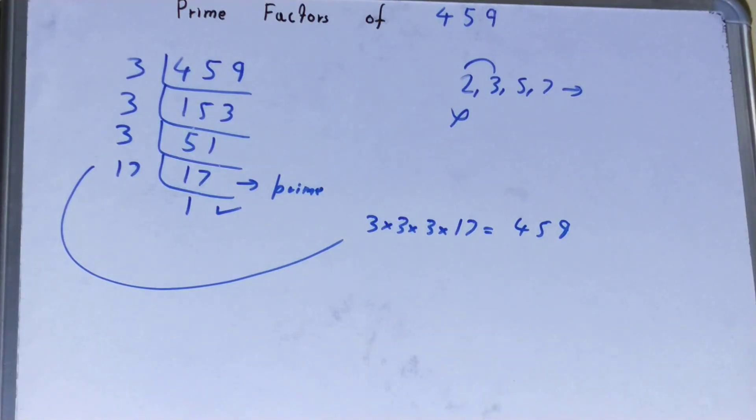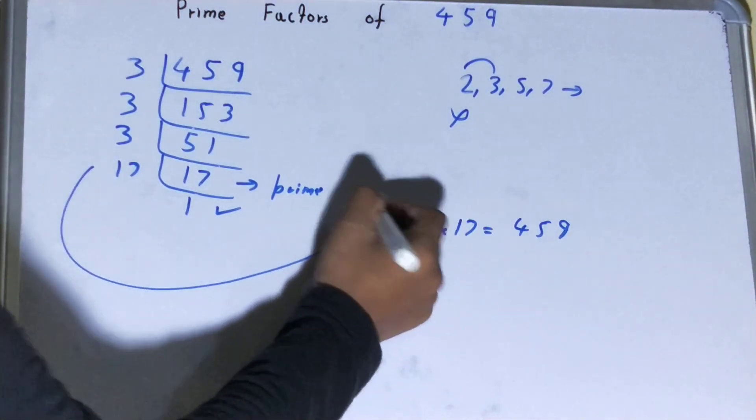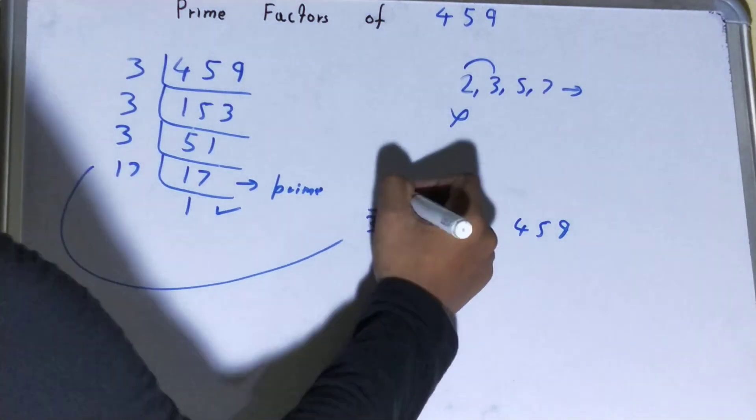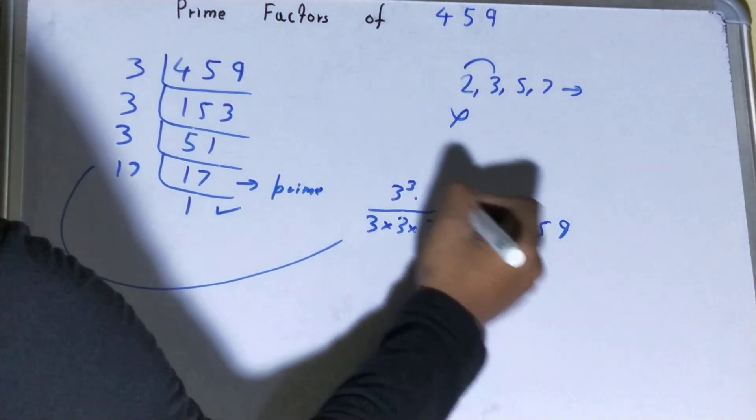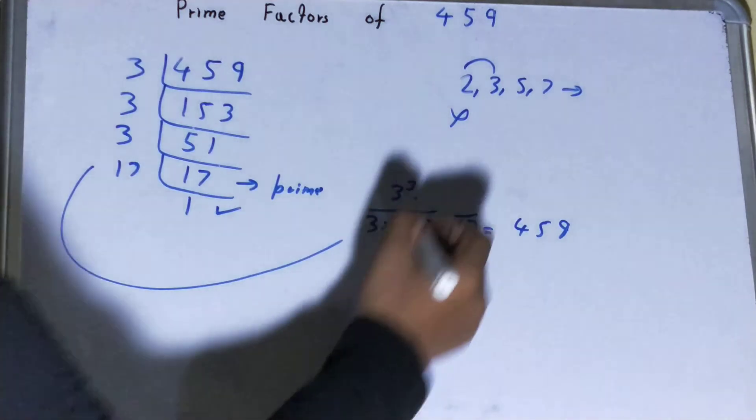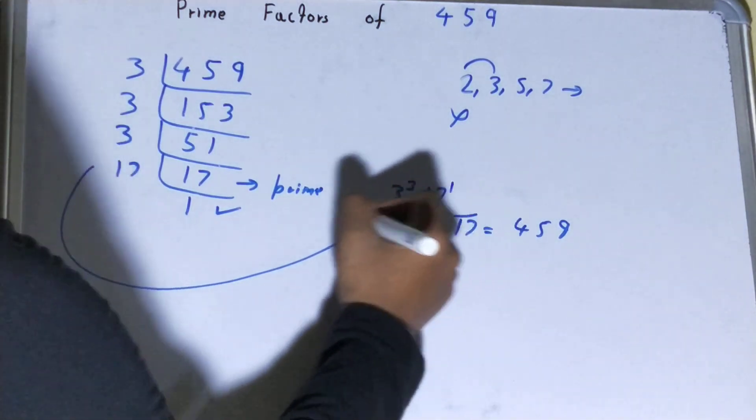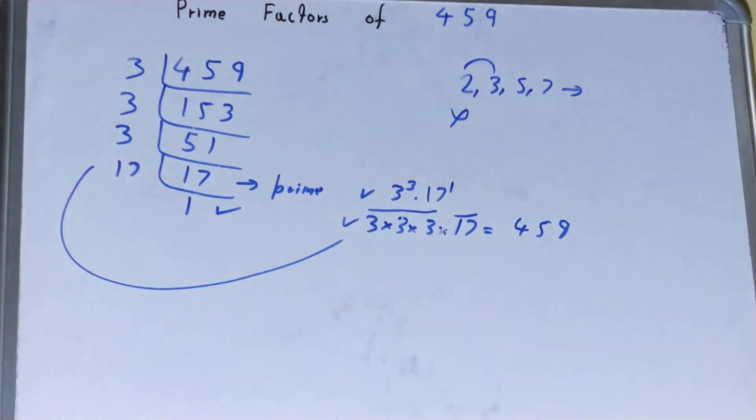If not, you need to recheck. You can also write it in a different way. You have 3 times 3 times 3, so you can write it as 3 raised to power 3. You have 1 times 17, so you can write it as 17 raised to power 1. You can write it this way or that way, it's up to you.